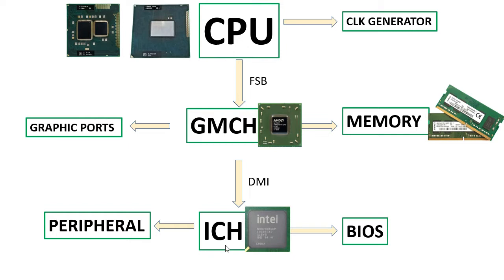The CPU is connected to the GMCH via the FSB or Front Side Bus. The GMCH is connected to the ICCH, or South Bridge, via a bus called DMI or Direct Media Interface.